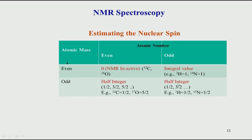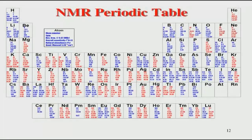The last case is odd-odd: for example, the proton (hydrogen-1) has 1 proton and no neutrons, giving odd atomic number and odd atomic mass, making it spin ½ — the most popular nucleus in NMR. Nitrogen-15, with 7 protons and 8 neutrons, is also an odd-odd combination with spin ½, making it another very important NMR nucleus. These are the conditions by which we determine NMR-active nuclei.